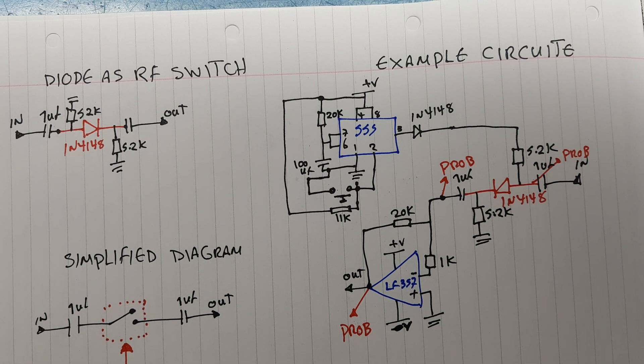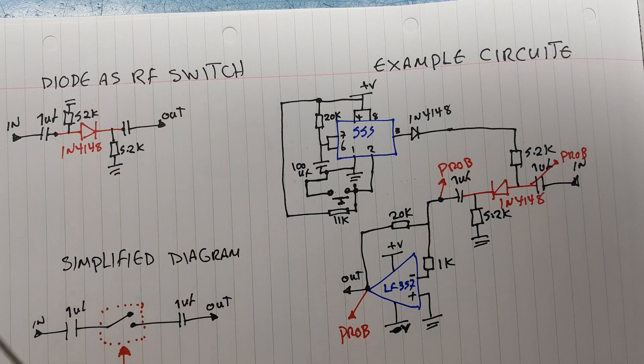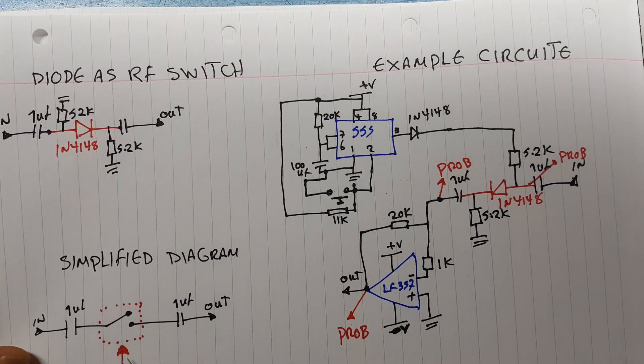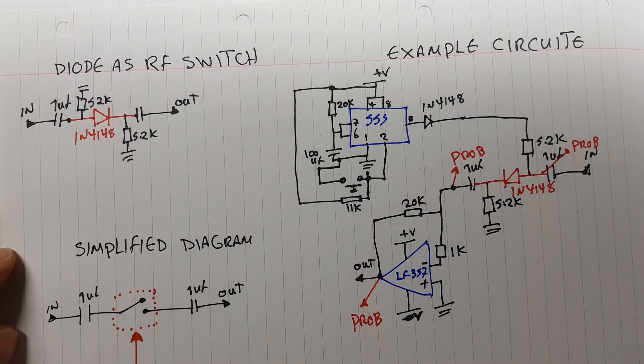Hi everyone, in this video we're going to take a look at using a switching diode as an RF switch. So instead of using relays or any method to switch RF signal on and off, we're going to use a switching diode.